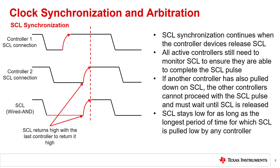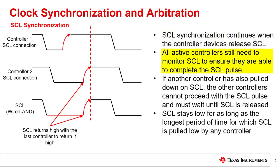Controller 1 is still monitoring SCL and must wait for the other controller to release the clock. Controller 1 cannot advance the SCL pulls until the SCL is available when controller 2 has released it. When multiple controllers are competing for the bus, SCL stays low for as long as the longest period of time that any controller pulls down SCL. Only after all the controllers have released the SCL can the line be released high for the serial clock pulls. This synchronizes the start of the serial clock for all controllers. For clock synchronization, each controller device must monitor the SCL line and react to cases where the SCL does not match its expected SCL output.